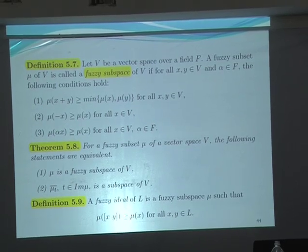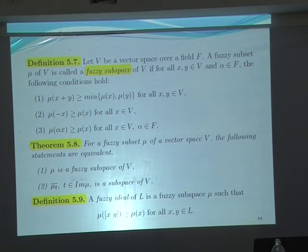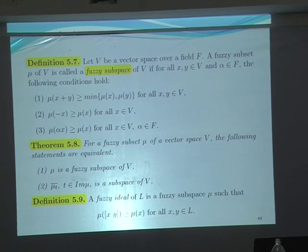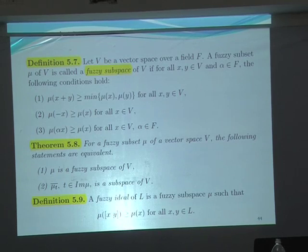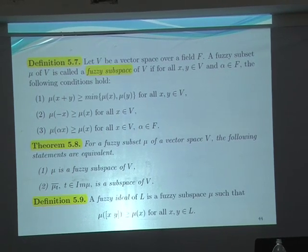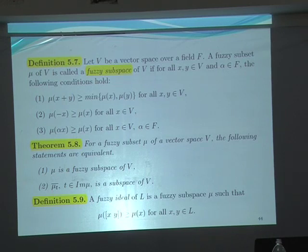The next theorem gives a relation between ordinary subspaces and fuzzy subspaces. This theorem tells us that mu is a fuzzy subspace if and only if the level set is an ordinary subspace. In the next definition, we consider the Fuzzy Lie Algebra — a fuzzy subspace that satisfies the additional axiom about the Lie bracket.